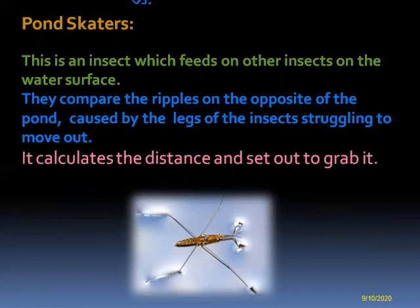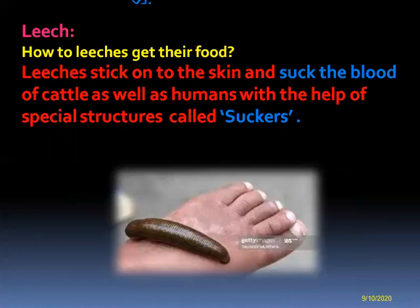Pond skaters — this is an insect which feeds on other insects on the water surface. They detect the ripples on the water caused by the legs of insects struggling to move. Pond skaters observe this movement on the water, calculate the distance, and set out to grab the insect. In this way they catch their food.